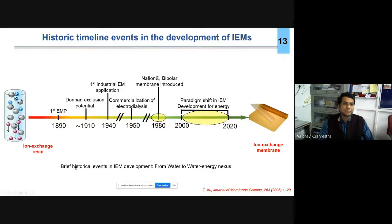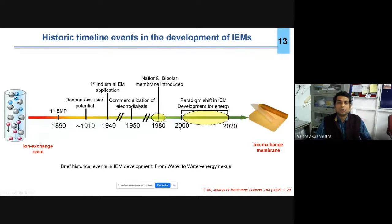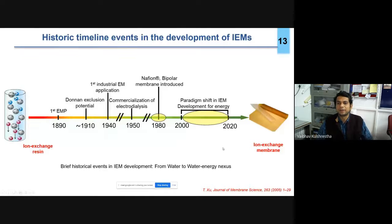The historic timeline of ion exchange membrane development: the first electromembrane process started in 1819; the first ion exchange membrane was developed in 1918; Nafion membrane and bipolar membranes were introduced around that era. From 1980 to 2000, different types of membranes were developed but not fully commercialized. Currently, Nafion — developed around 1980 — remains the benchmark commercial membrane. Many researchers are actively working on IEM development for both water and energy applications.